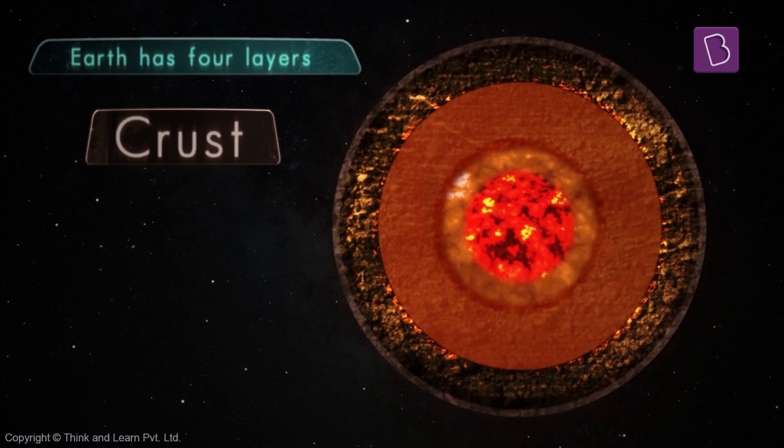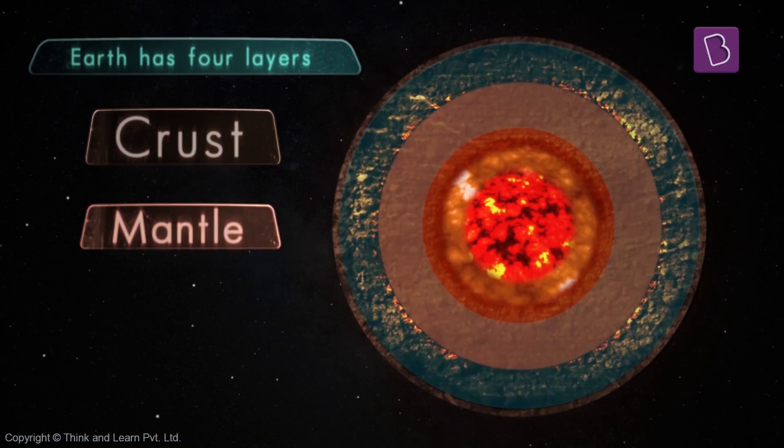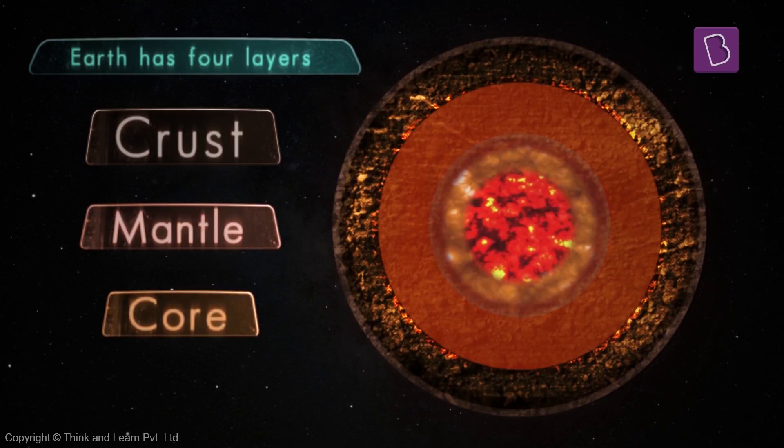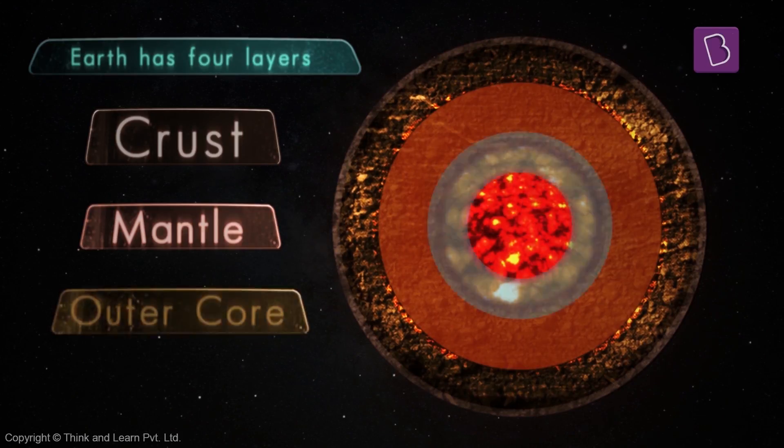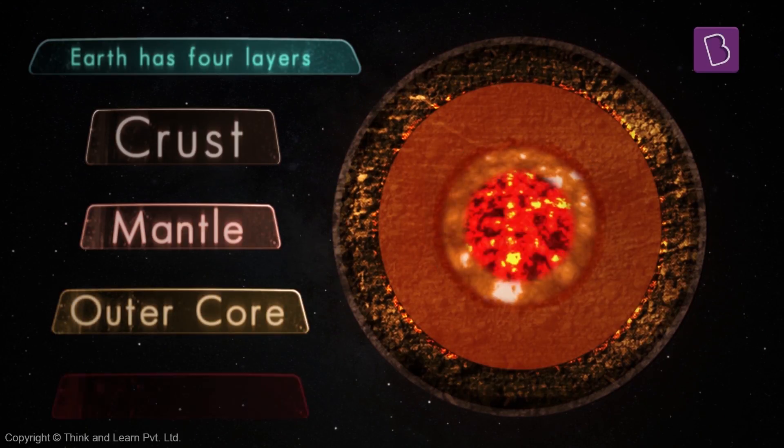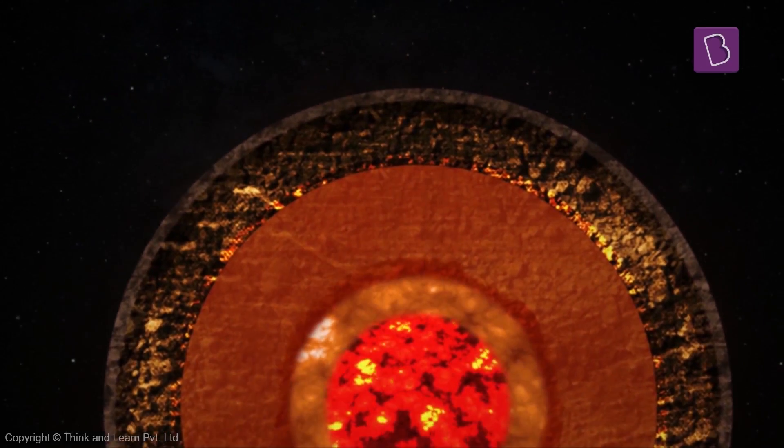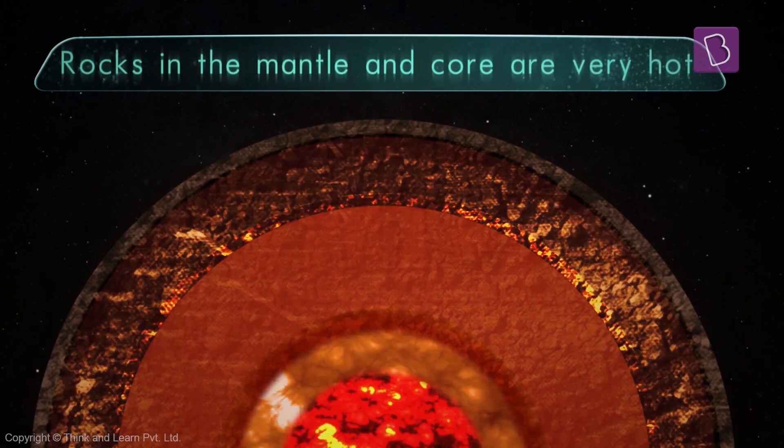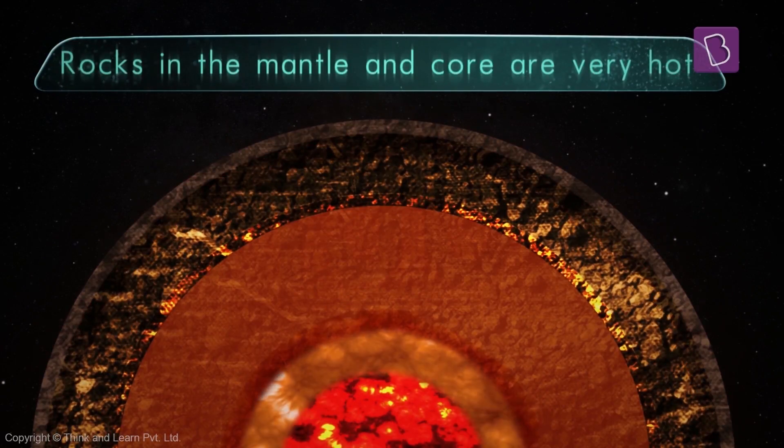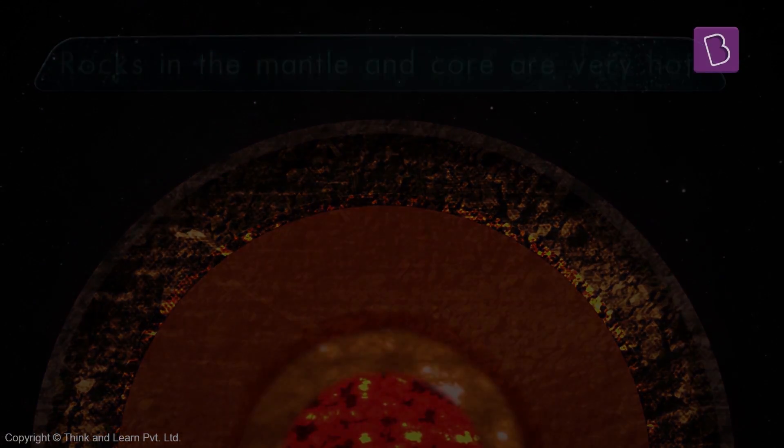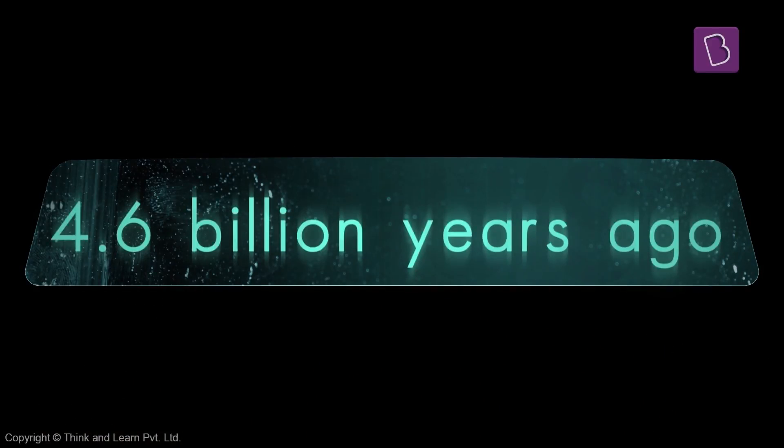The outermost crust followed by the mantle and then the core, which is again divided into the outer core and the inner core. Rocks in the mantle and the core are still really hot from the formation of the Earth about 4.6 billion years ago.